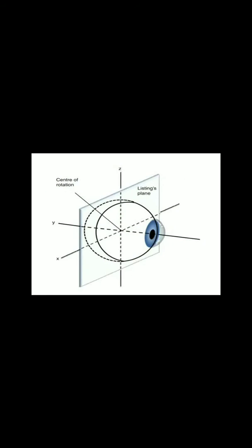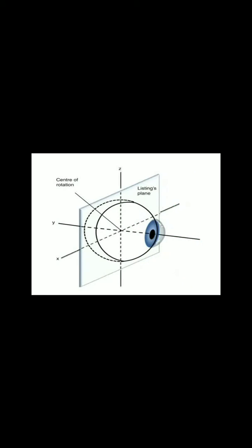The eyeball rotates mainly along three axes: the x-axis, y-axis, and the z-axis. Along the x-axis we have elevation and depression. Along the y-axis we have intorsion, that is movement towards the nose, and extorsion, that is moving outside. Along the z-axis the eyeball moves either towards the nose or to the other side.